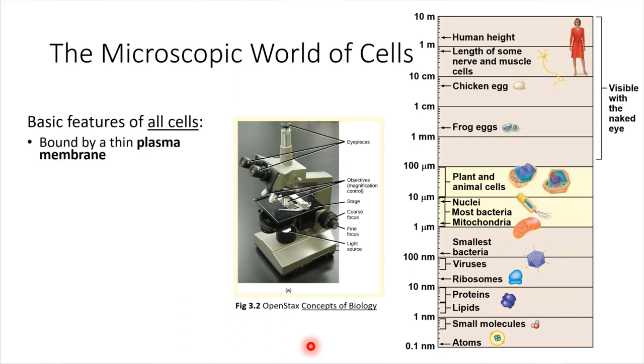Cells all have a boundary. They have something that encloses them and separates them off from the rest of the world. That boundary is called a plasma membrane. I'll be showing you a picture of a plasma membrane in just a minute.